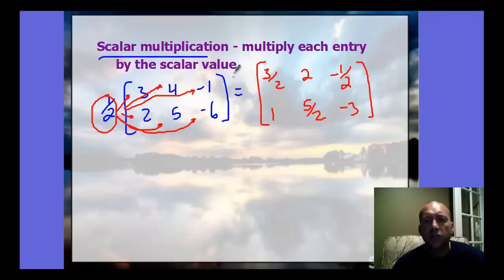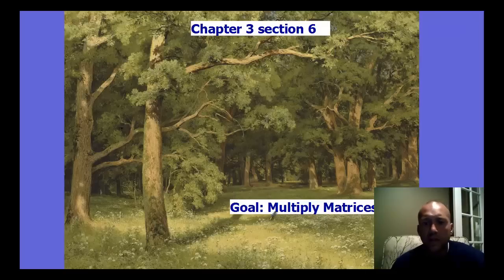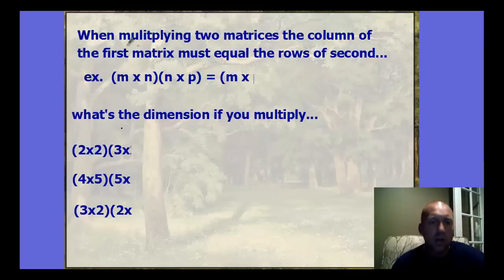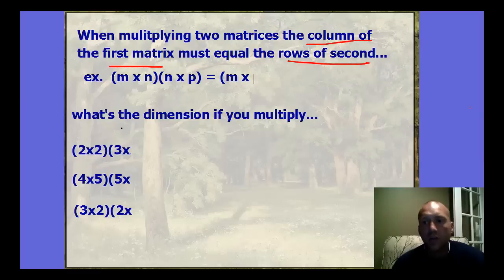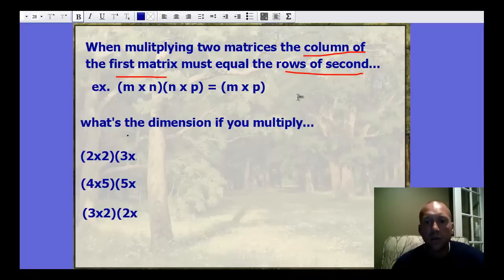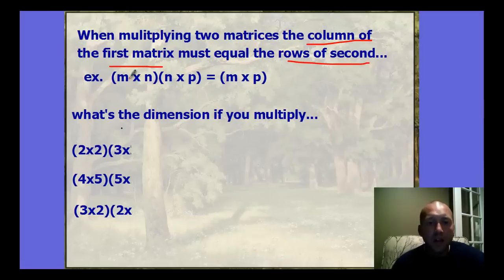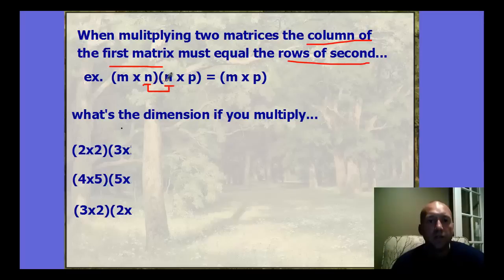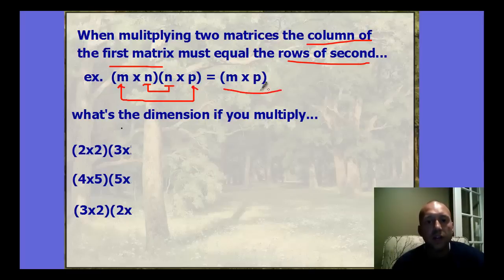You can combine scalar multiplication with adding and subtracting matrices. For matrix multiplication — the confusing operation — the number of columns in the first matrix must equal the number of rows in the second. They don't need to be the same size. The resulting matrix has the rows of the first and the columns of the second. These two middle numbers must match.